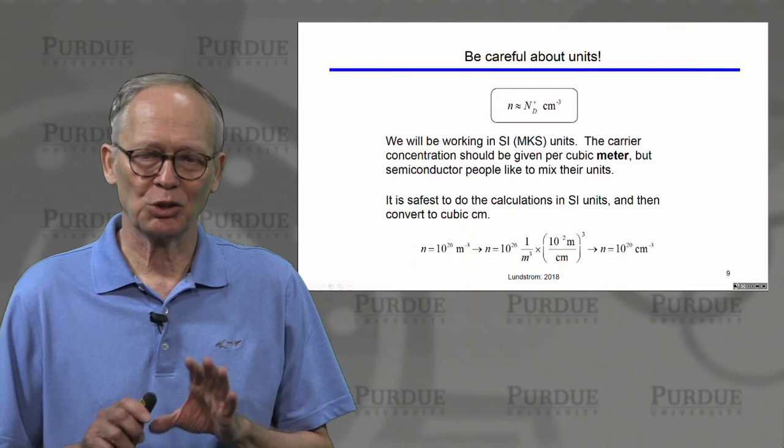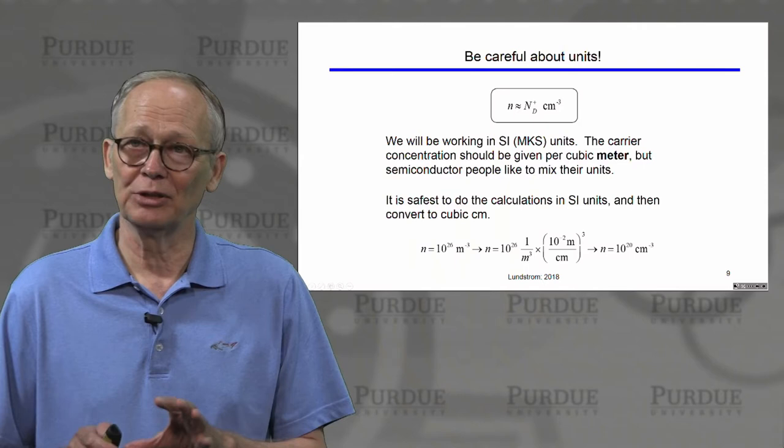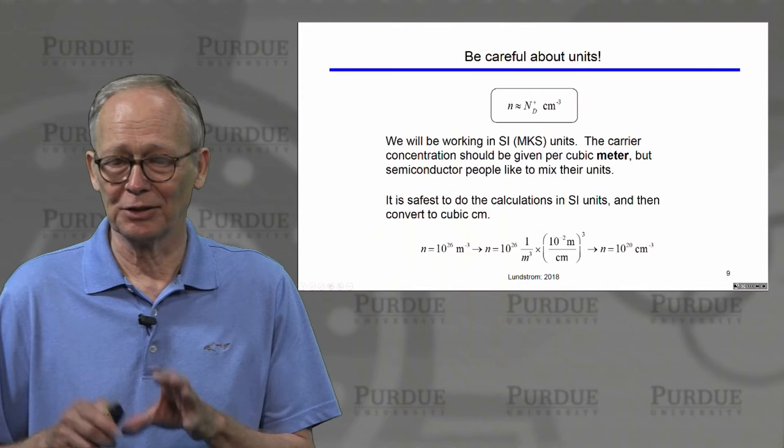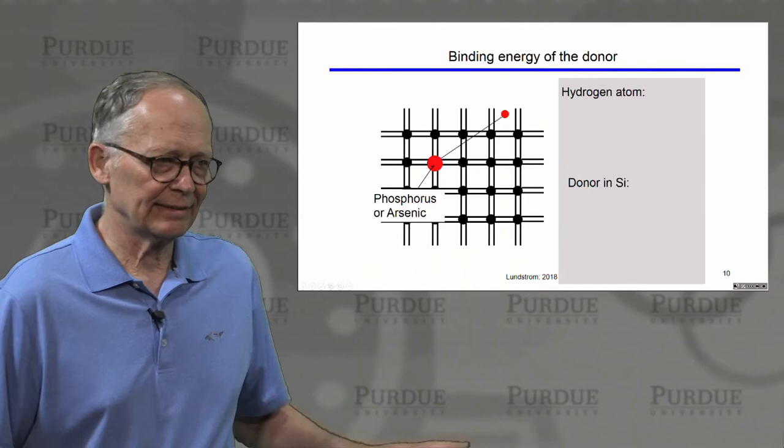A reminder about units: we always quote these concentrations per cubic centimeter. Proper SI units would be per cubic meter. The safest way to do calculations is to work in SI units first and then convert from per cubic meter to per cubic centimeter.